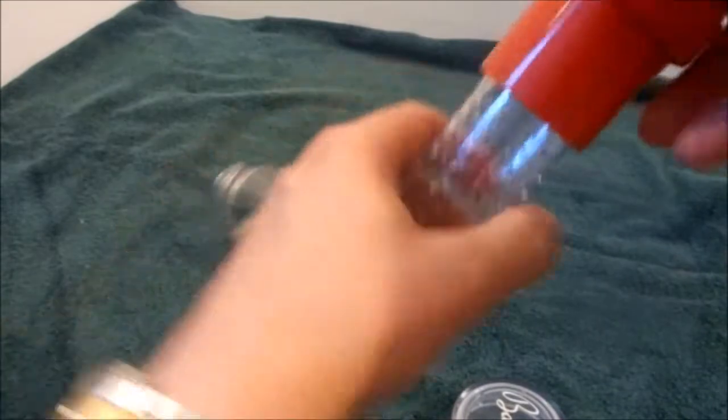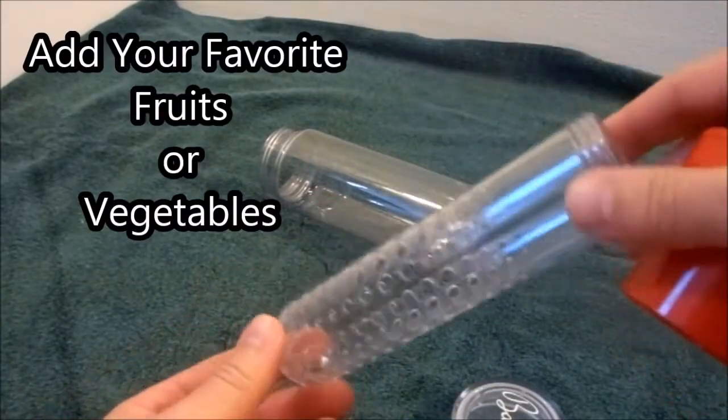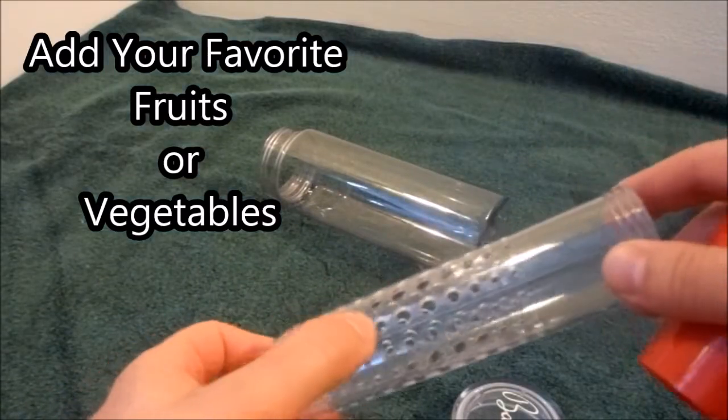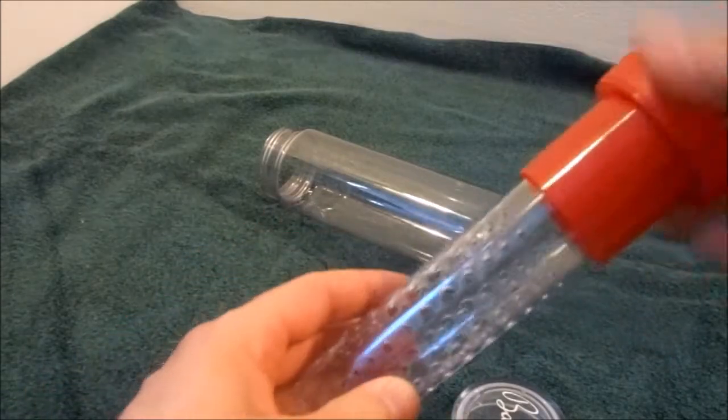And what makes this an infuser is you simply pull this out and untwist the top. Add your fruit into this compartment. As you can see, it has holes to let the juices of the fruit integrate with your water. Simply twist it back on.